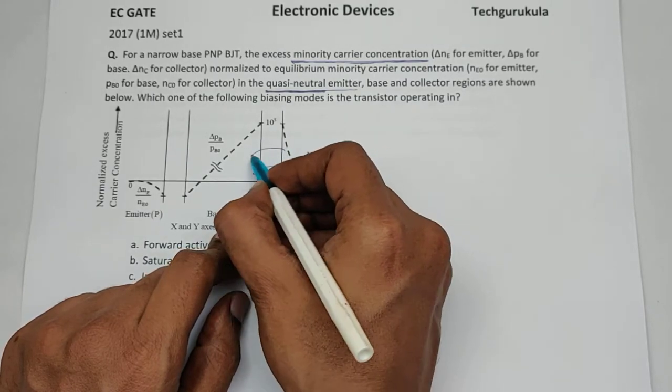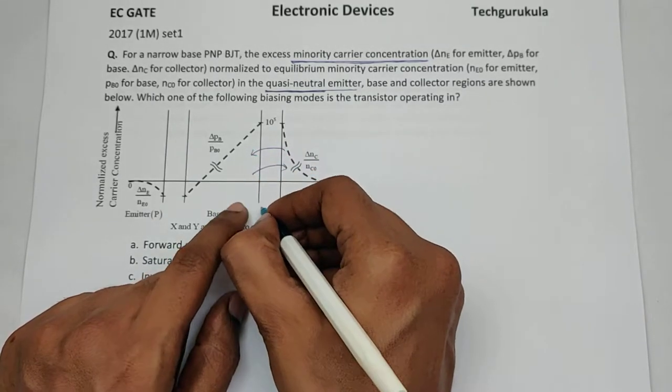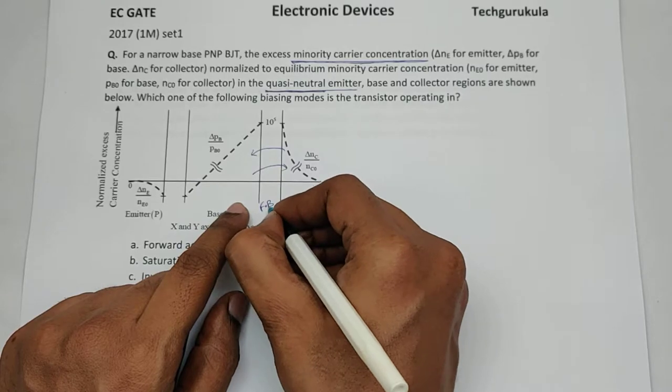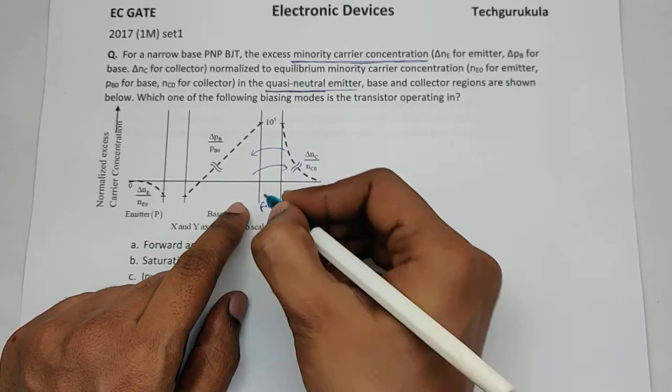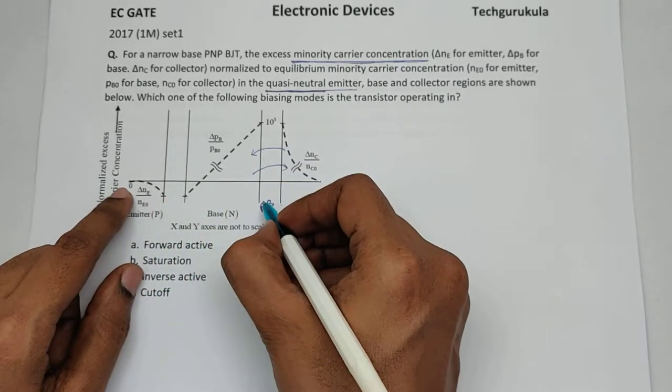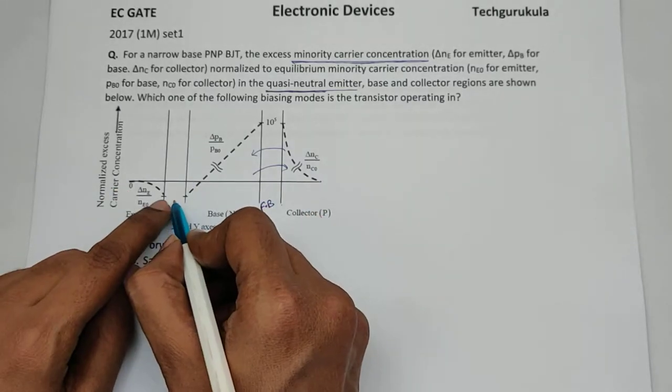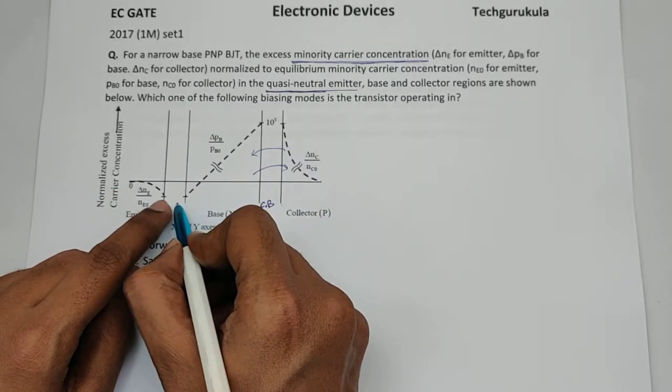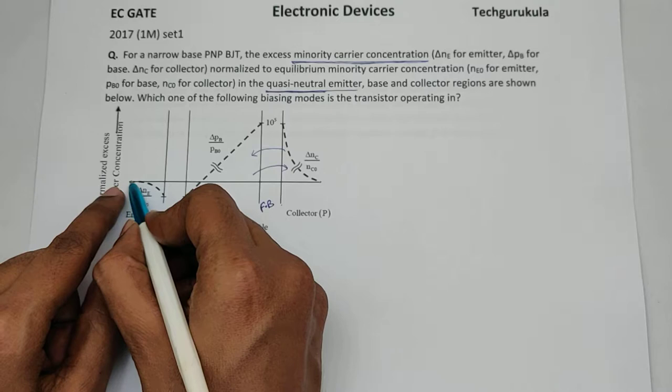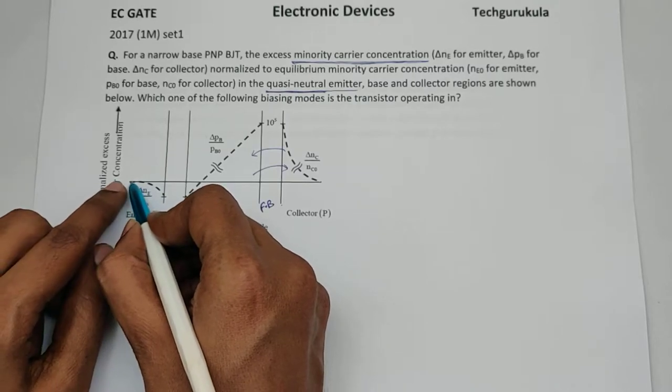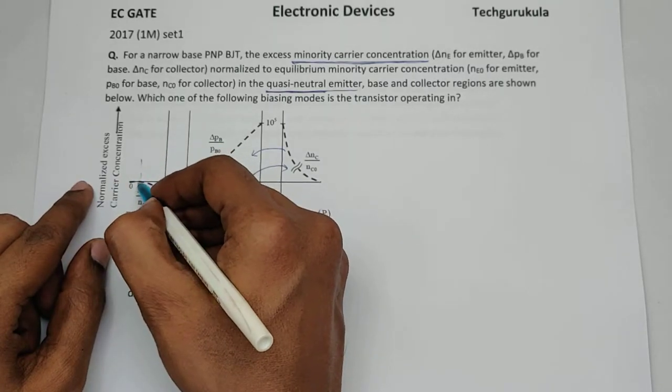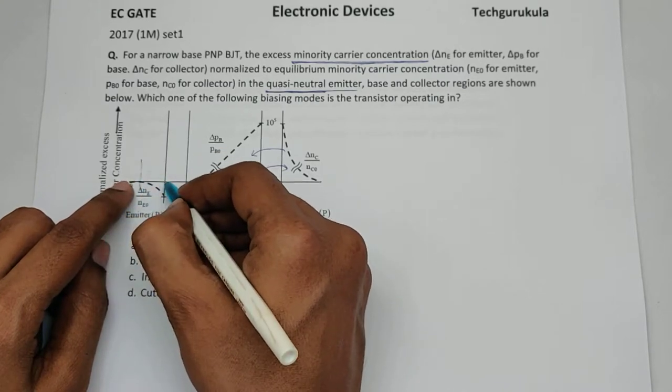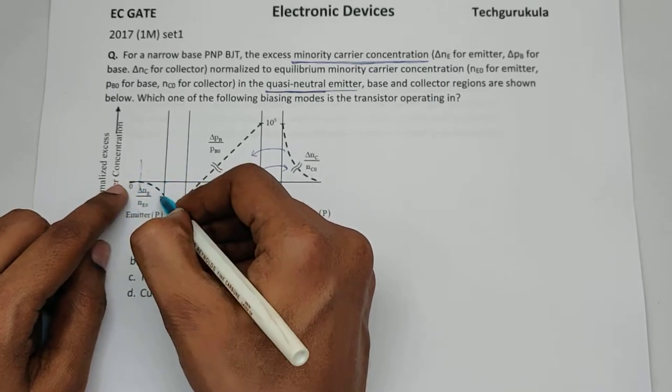There is injection from here to here, which means this junction is forward biased. If you look at this junction, the carrier concentrations are not really high—they're coming closer to equilibrium at the bulk, which means near the depletion region edge